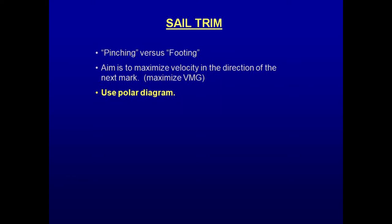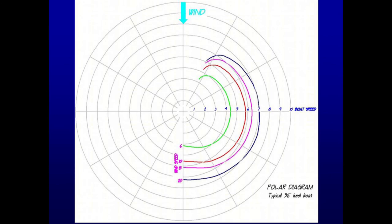Here is a polar diagram for a hypothetical 36-foot displacement-style keelboat. The four different colored curves represent true winds of 6, 10, 15, and 20 knots. The concentric circles represent boat speed in knots, and the angles represent true wind angles. With a true wind speed of 15 knots, the optimum angle to steer upwind is about 40 degrees to the true wind, which will result in a boat speed of about 5.9 knots and a velocity made good into the wind of about 4.9 knots.